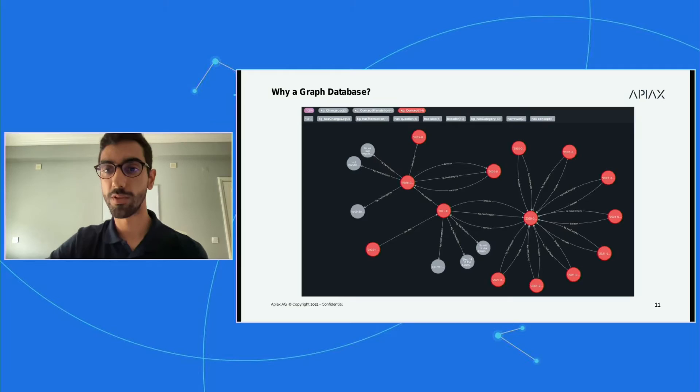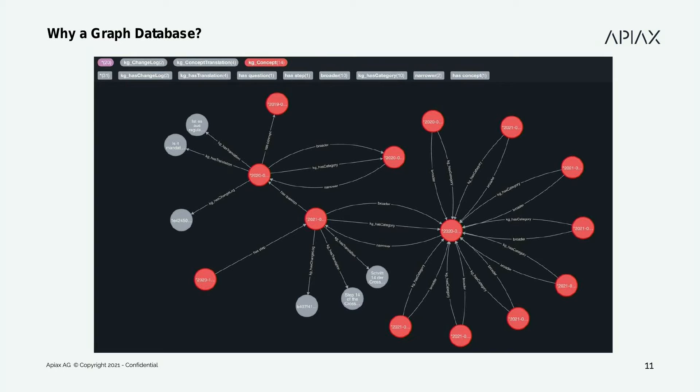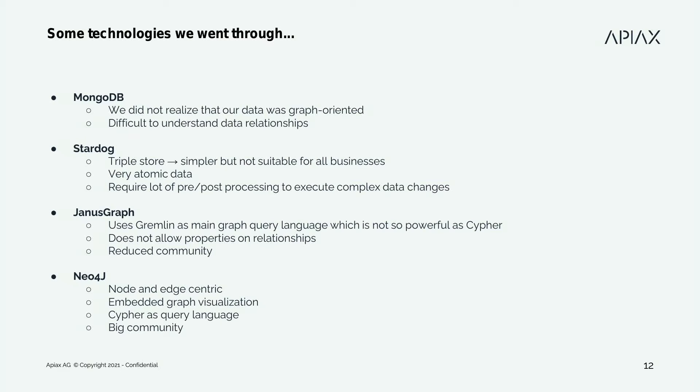Here in this image, we have a small sample of our Neo4j database. You can see some nodes — different colors because they have been assigned different labels — and some relations that we support. My colleague Peter will explain in more detail later. We think it's important to explain the path we took to choose the technology. We started with MongoDB, but we realized our data was really highly linked and very graph-oriented, making it very difficult to track this amount of relationships in MongoDB. That's why we discarded it.